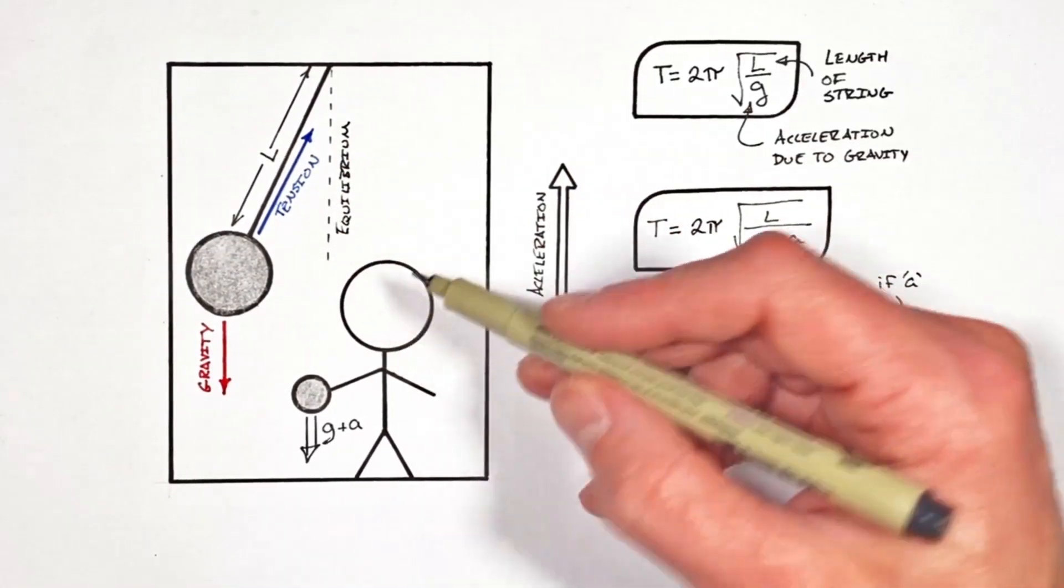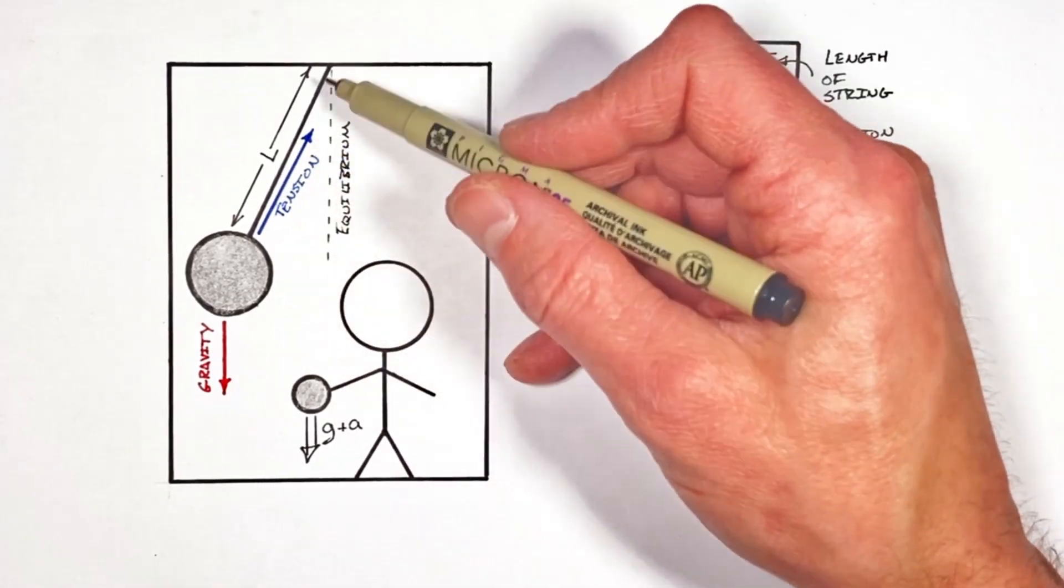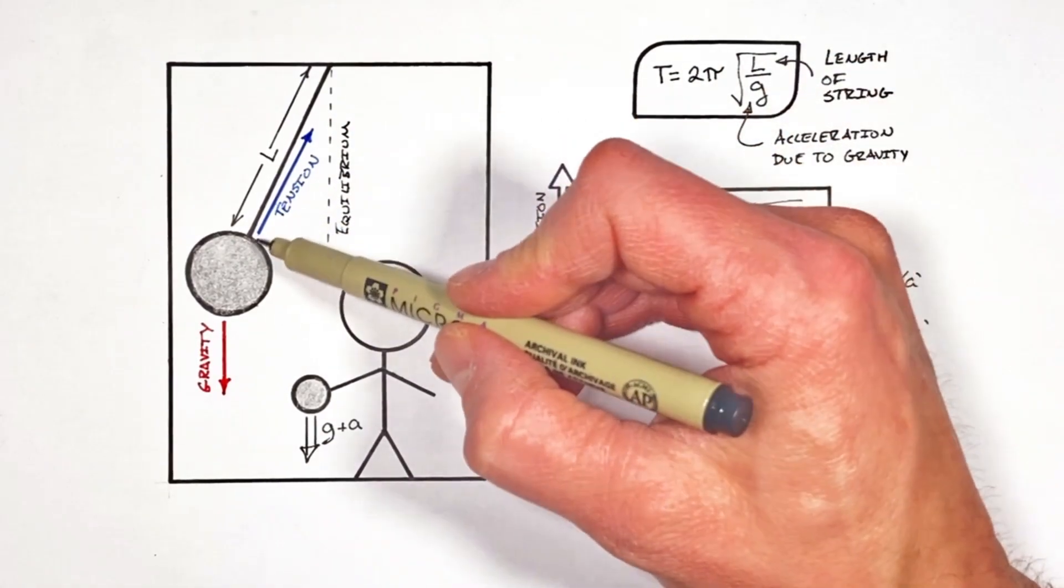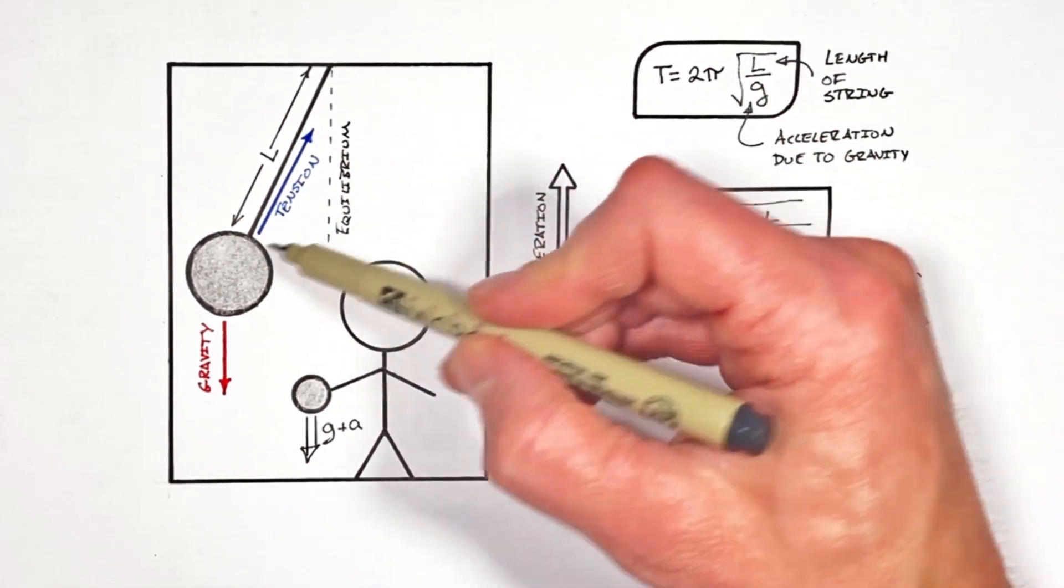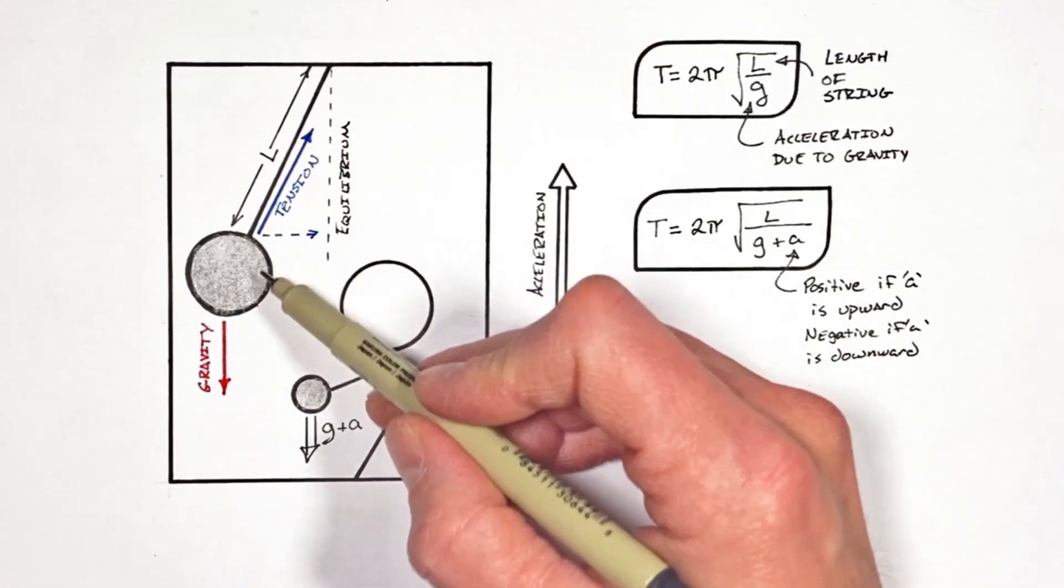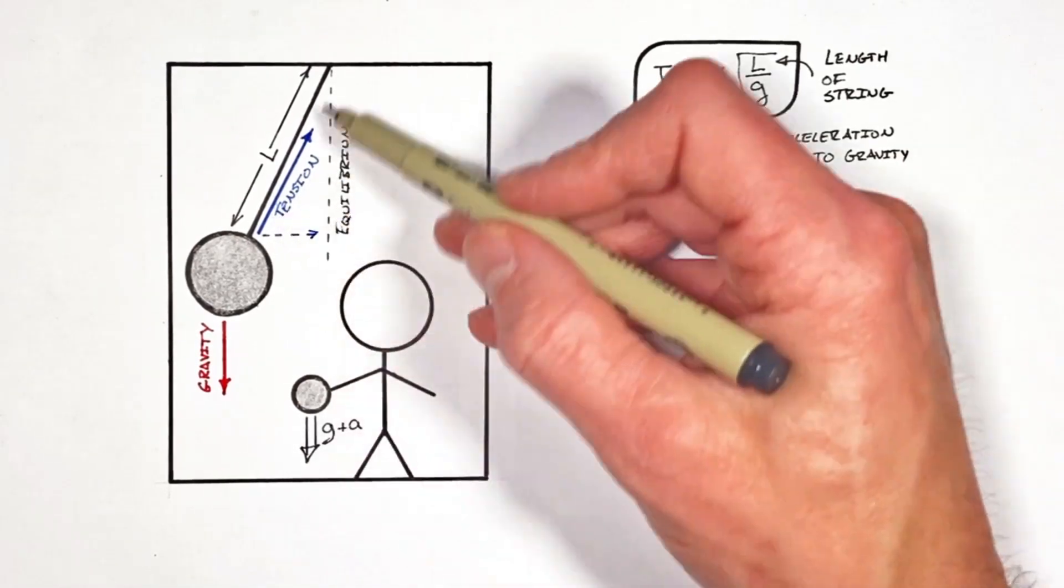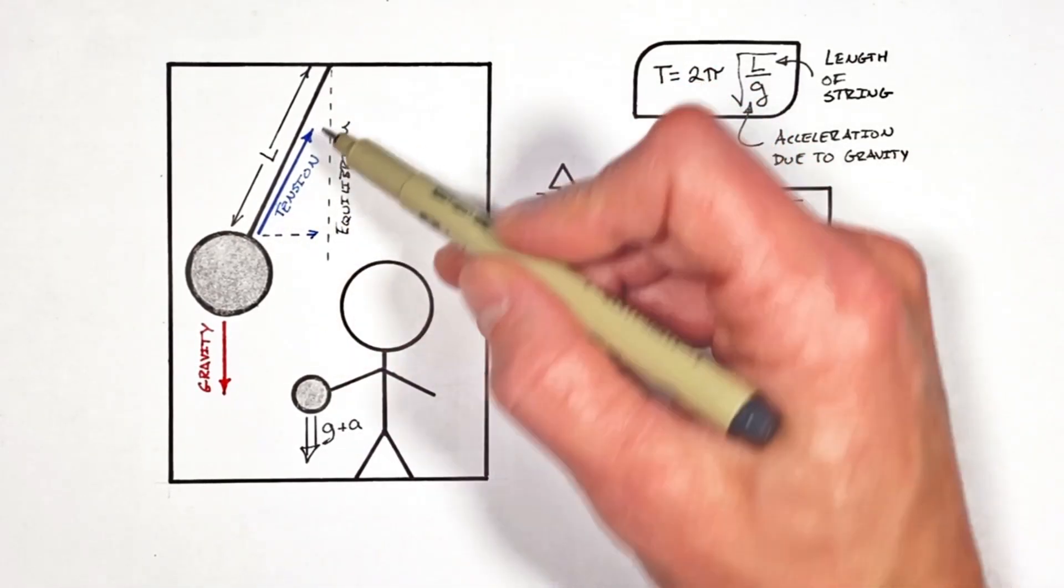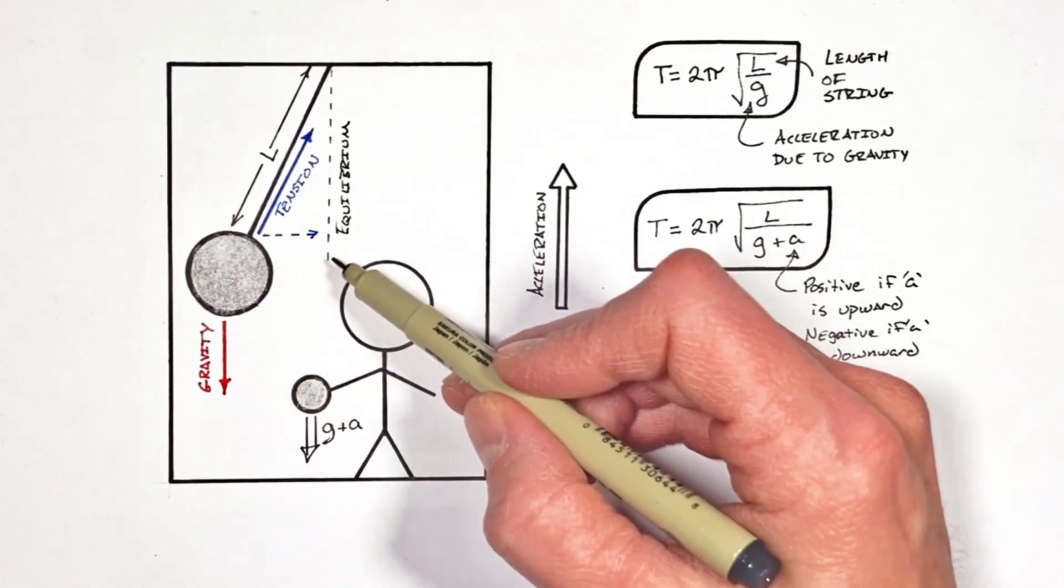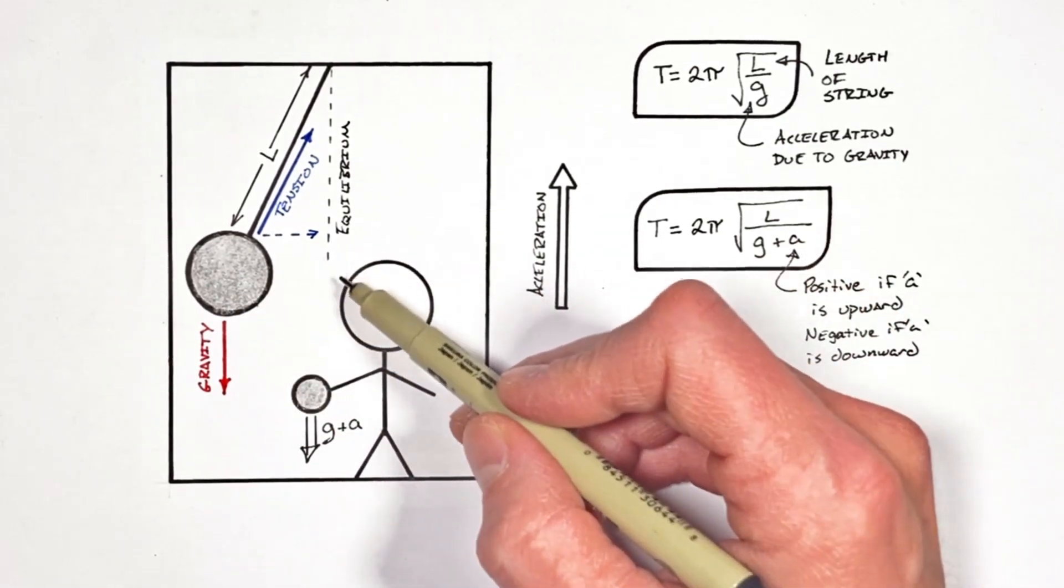And really, all that happens when we make this elevator accelerate upward is this tension in the string grows larger, causing the ball to accelerate upward along with the elevator. But because that tension is greater, the horizontal component of tension, which is what we refer to as the restoring force pulling the pendulum back to equilibrium, is going to grow just as the tension grows. And if that restoring force grows, the pendulum is going to be pulled back towards equilibrium more quickly, causing the pendulum to oscillate back and forth faster.